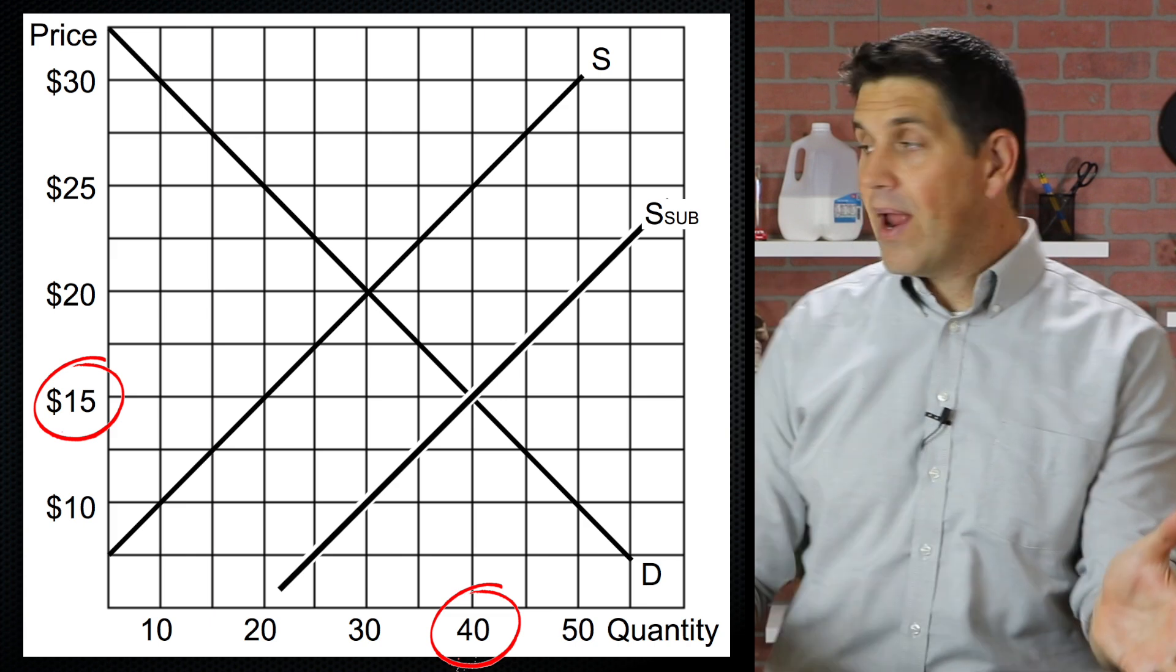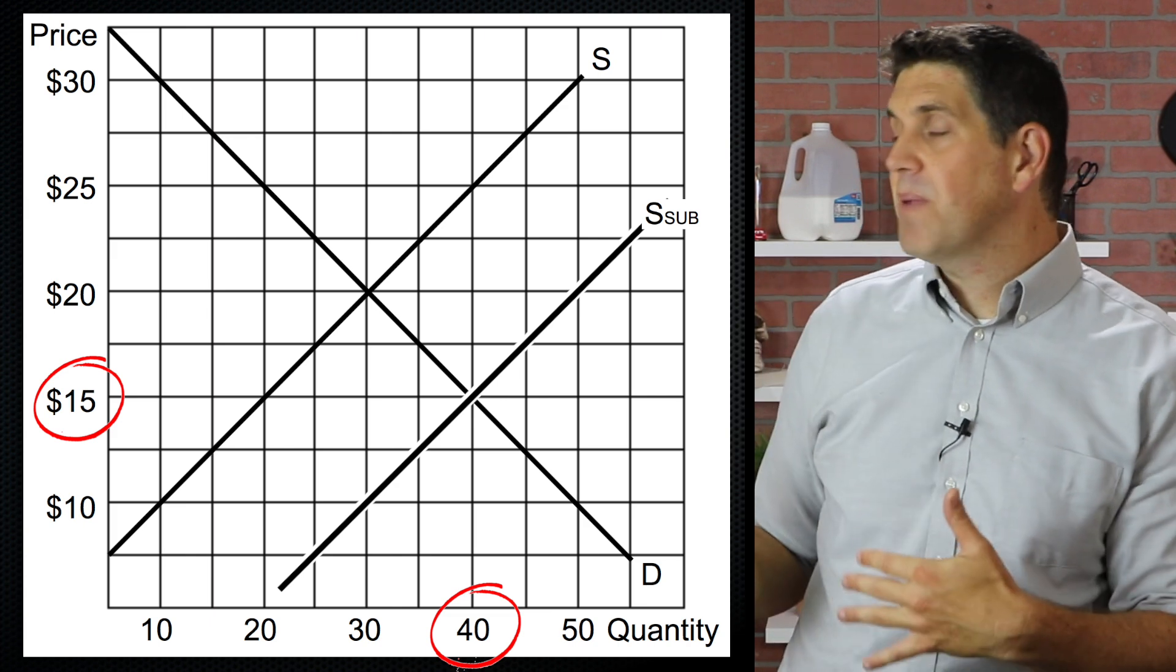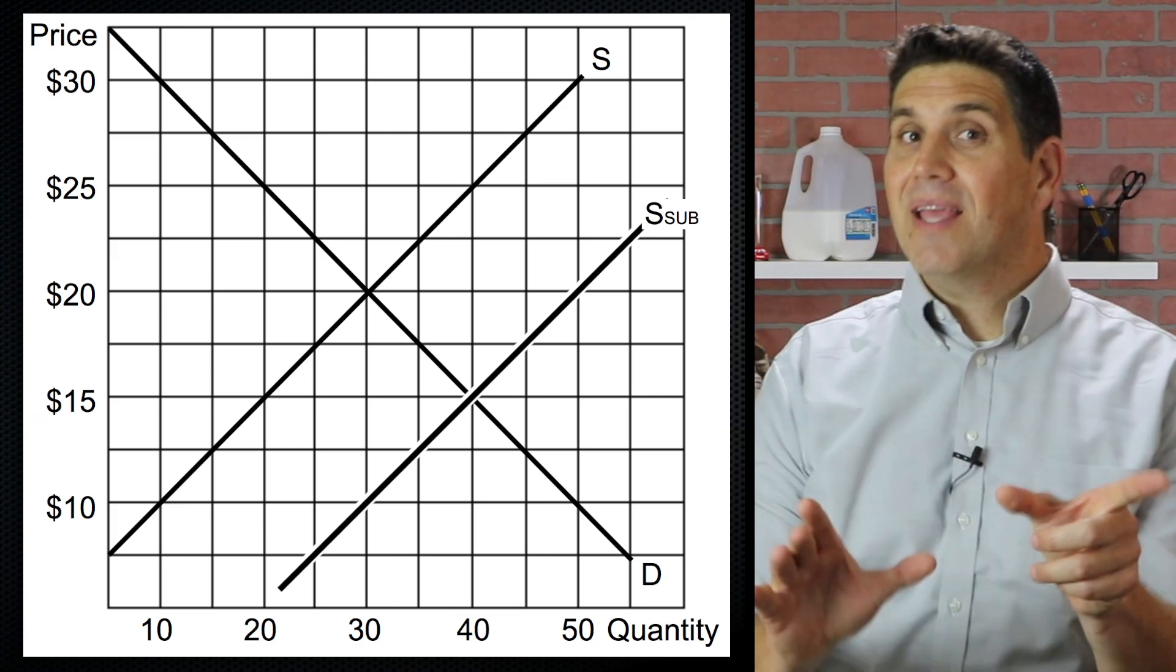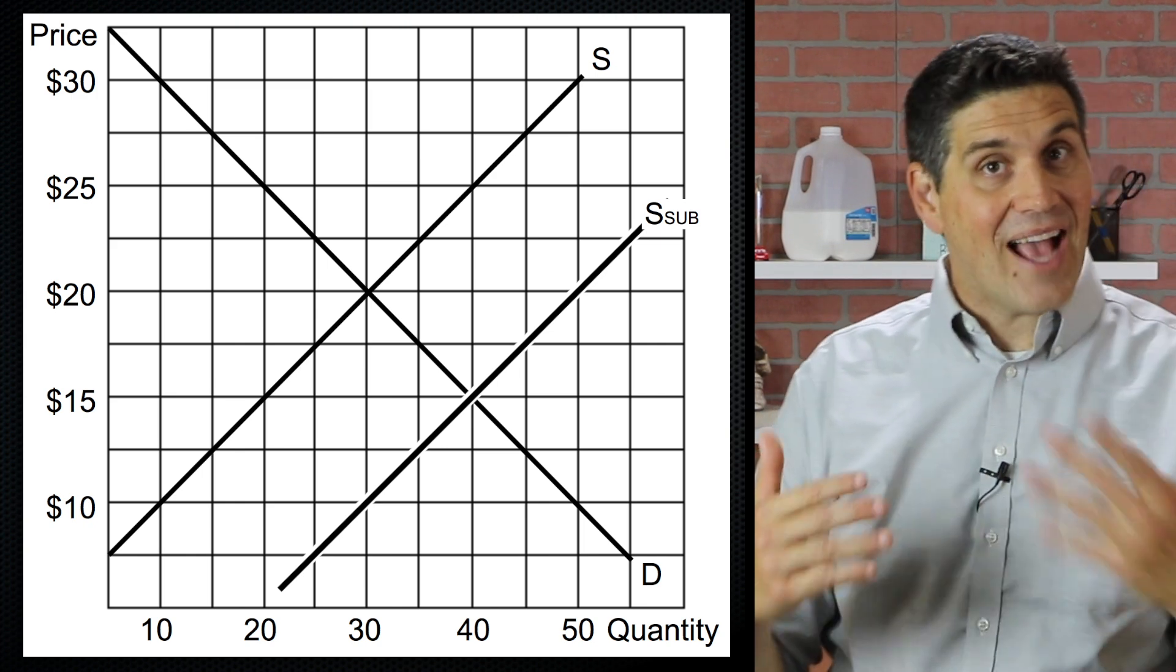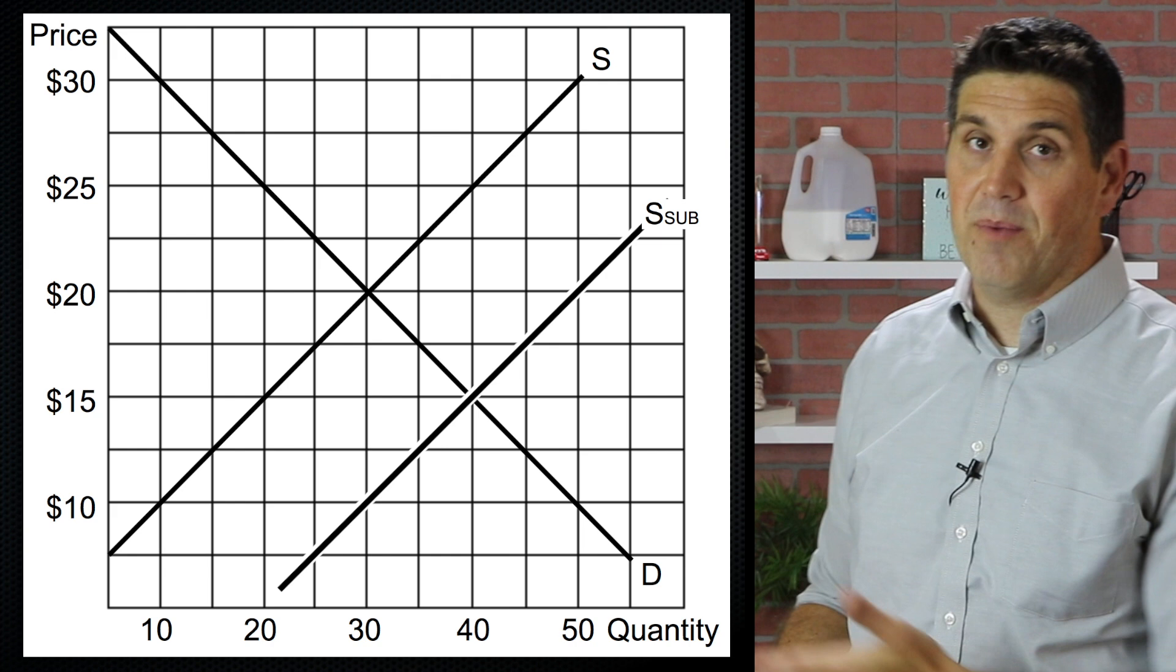So the supply curve shifts to the right by a vertical distance of $10. And on the surface, that looks great. The price has gone down. There's more chickens being produced and everyone's happy. But there's some hidden costs here because this graph doesn't show all the money that taxpayers are giving these chicken farmers.